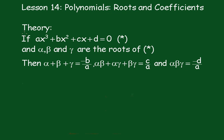We'll prove this in a similar way we did for the quadratic. So what we'll do, we'll take that first one, we'll divide through by A and we get X³ + (B/A)X² + (C/A)X + D/A = 0.